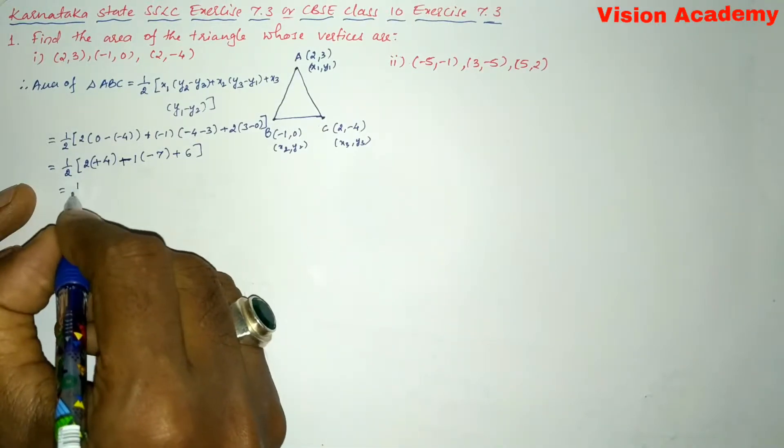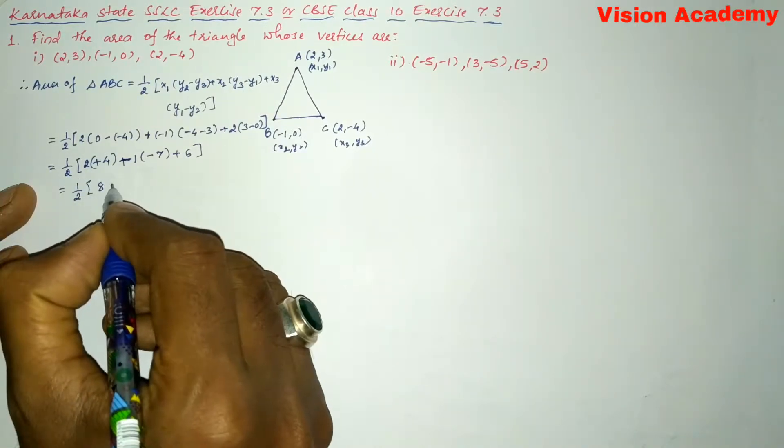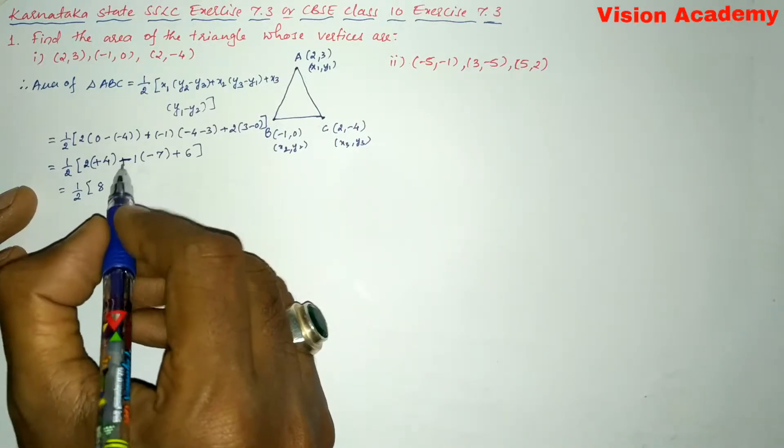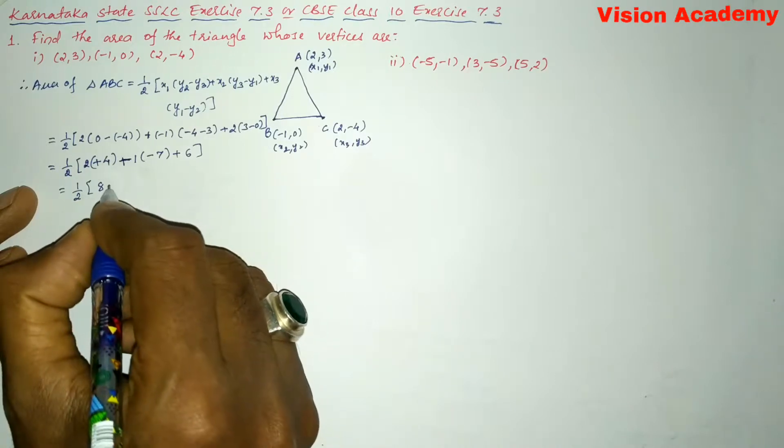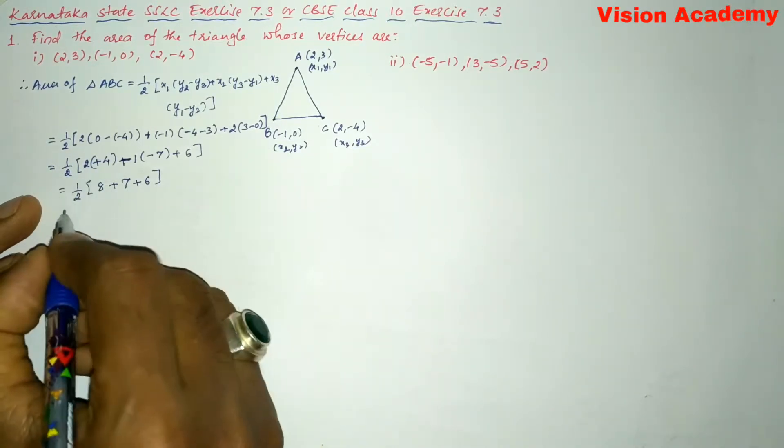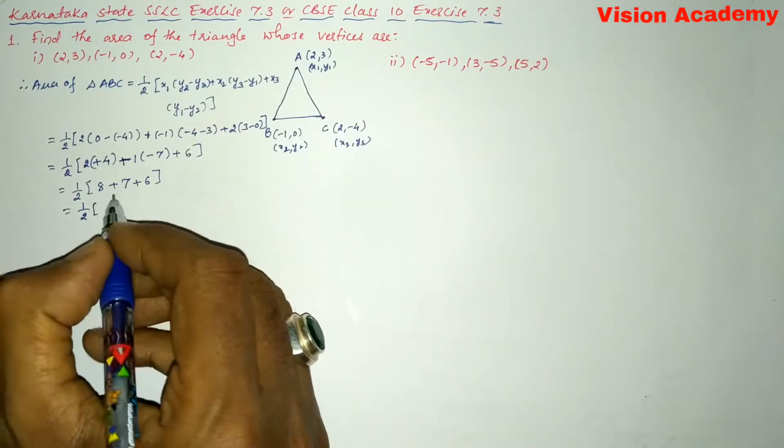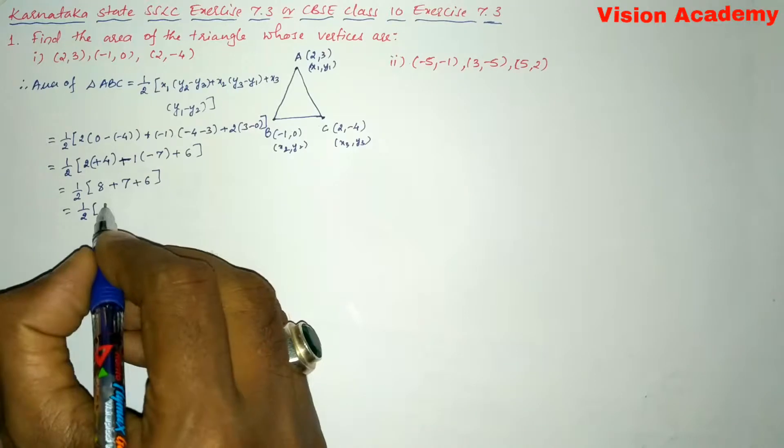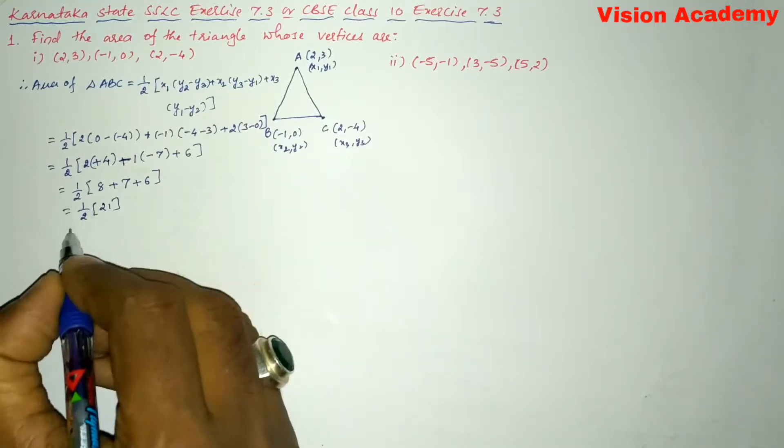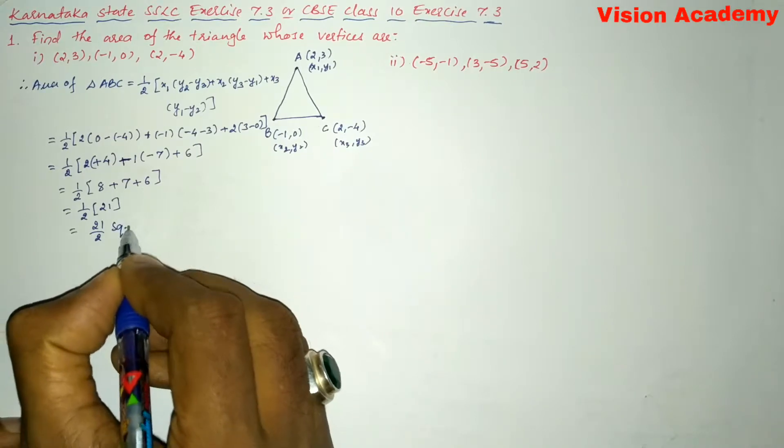Now let us further simplify: 1/2 into (8 + 7 + 6). So 15 plus 6 is 21. So here this gives us 21/2 square units. So this is area of triangle ABC.